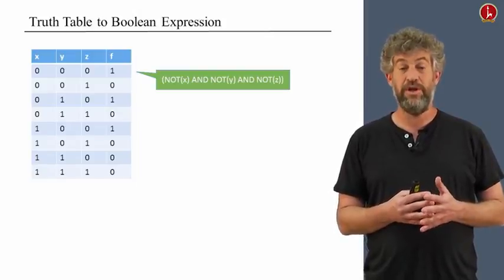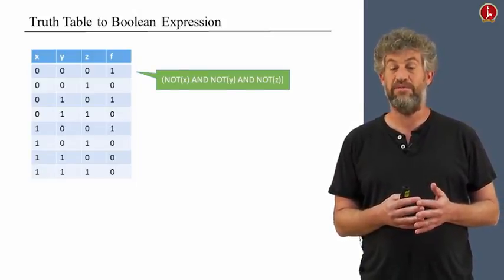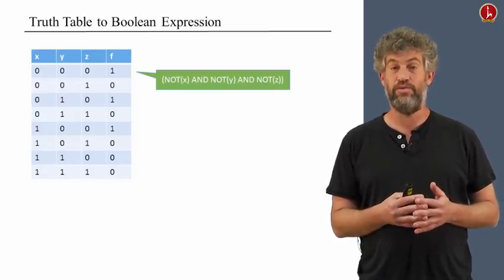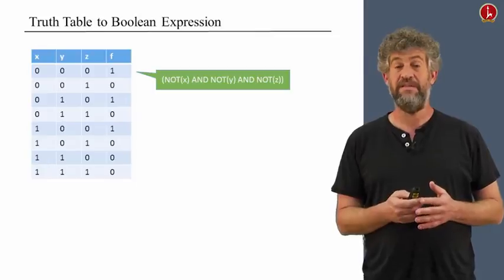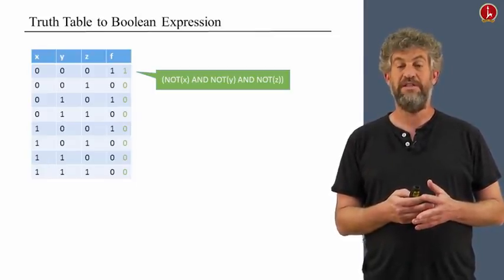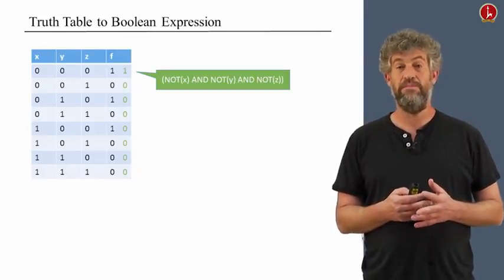For example, in particular, since here in this row the values of x, y, and z are 0, 0, and 0, if we look at the expression not x and not y and not z, that is going to be a Boolean function, the green Boolean function, that only gets a value 1 on this row.